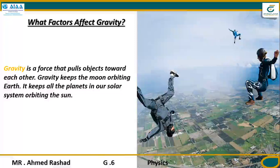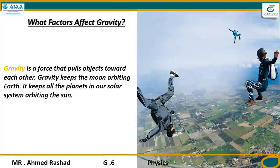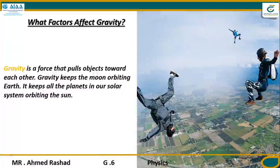Number one: gravity that occurs on Earth, called Earth's surface gravity — the attraction between an object and the Earth's surface. Number two: universal gravity, which occurs between planets, stars, and other objects in space. In simple words, gravity is the force that pulls objects toward each other. Any two objects acting on each other cause gravity.